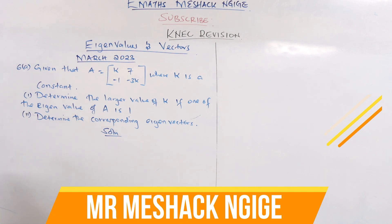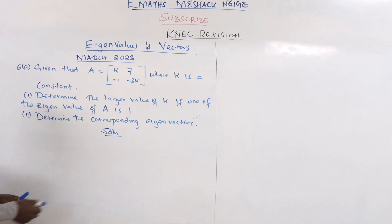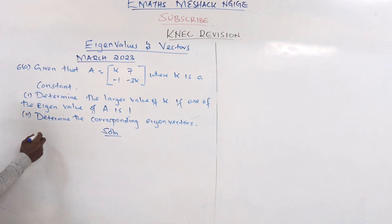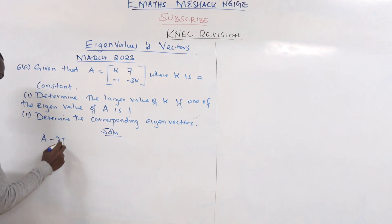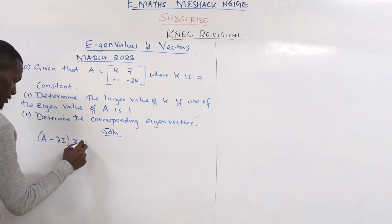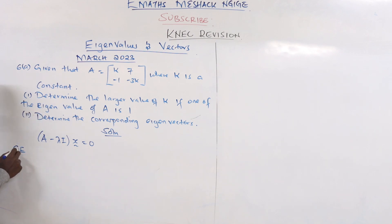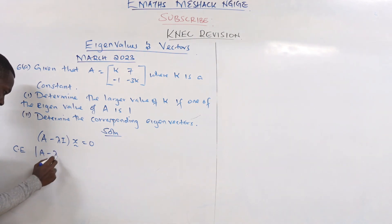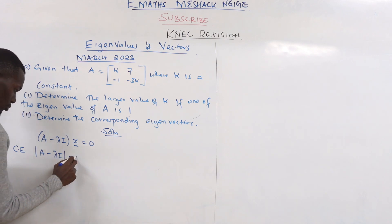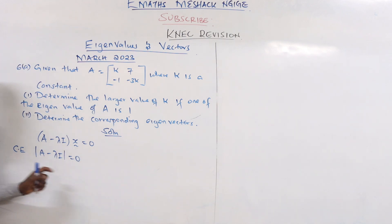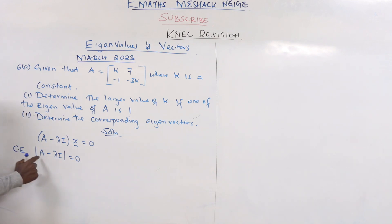We also need to determine the corresponding eigenvectors. We know the equation is given by (A minus lambda I) times the vector equals zero. To find the eigenvalues, we define the characteristic equation, given by the determinant of (A minus lambda I) equals zero.